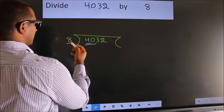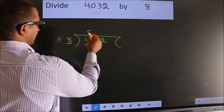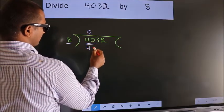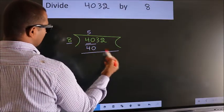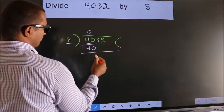When do we get 40 in the 8 table? 8 fives 40. Now we should subtract, we get 0.